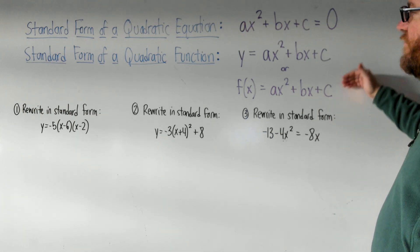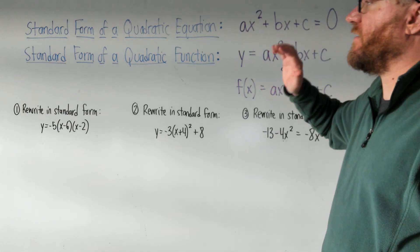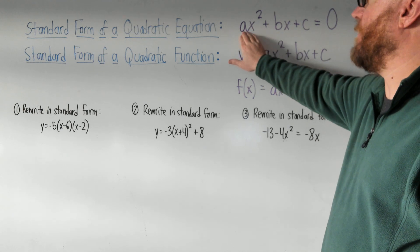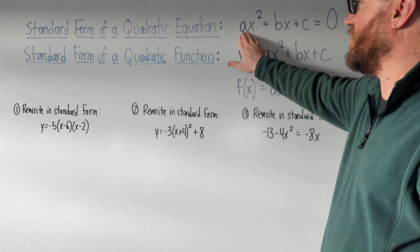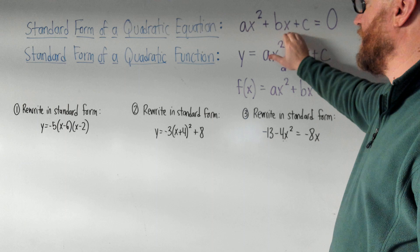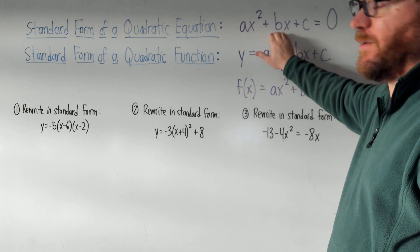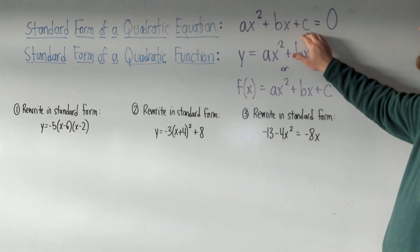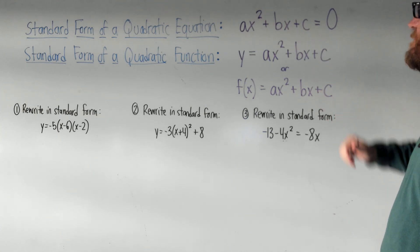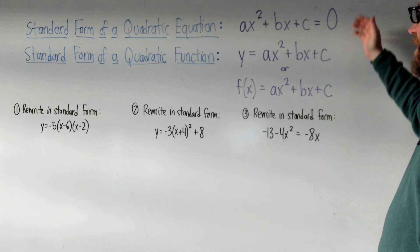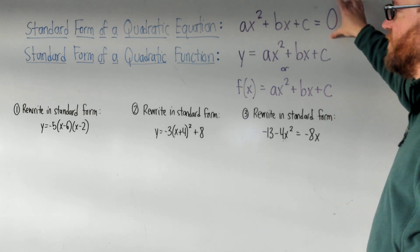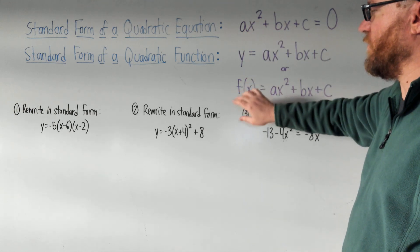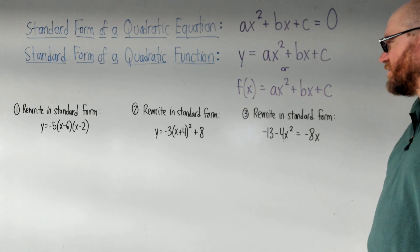In all three forms, quadratic equations have an x squared and might have a coefficient attached. They have a regular x and might have a coefficient attached. And they have a constant, which just means a plain old number. If it's an equation, it'll be equal to zero. And if it's a function, it'll have a y equals or an f of x equals.